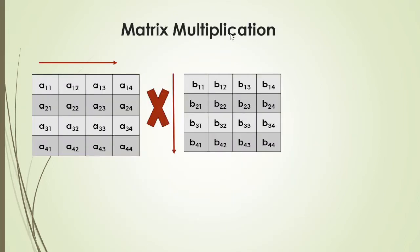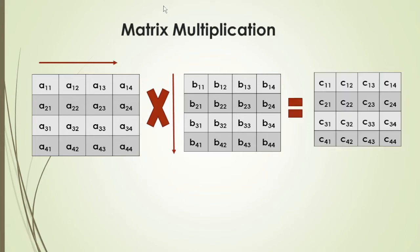How do we do matrix multiplication? We take each row of A matrix and each column of B matrix, multiply corresponding elements, and put the result in C matrix. For example: A11×B11 + A12×B21 + A13×B31 + A14×B41 gives C11. Similarly, C12 is the first row times the second column, C13 the third column, and C14 the fourth column. This is the usual way we multiply matrices.